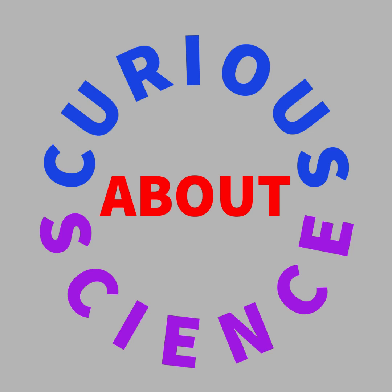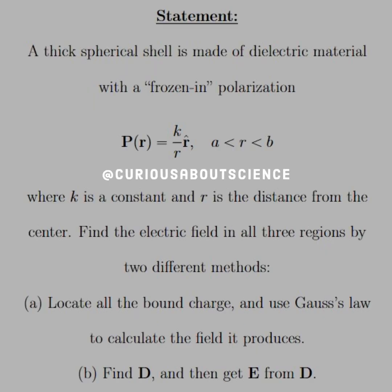Welcome back. Today's statement reads: a thick spherical shell is made of dielectric material with a frozen end polarization. P of R is equal to K over R in the R-hat direction for R between A and B, where K is a constant and R is the distance from the center. Find the electric field in all three regions by two different methods: A, locate the bound charge and use Gauss's law to calculate the field it produces, and B, find the electric displacement and then get E from the electric displacement.